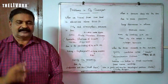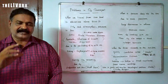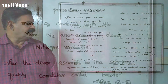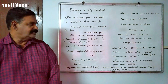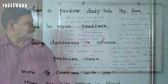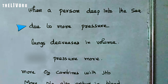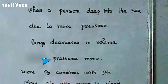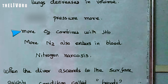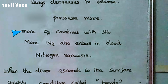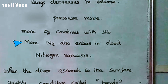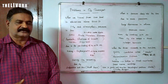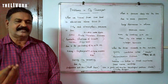When diving deep in the sea, due to more pressure, the lungs decrease in volume. The pressure inside the lungs is also more, so more oxygen combines with hemoglobin. Likewise, more nitrogen also combines with blood. That condition is called nitrogen narcosis — the accumulation of more nitrogen in the blood.